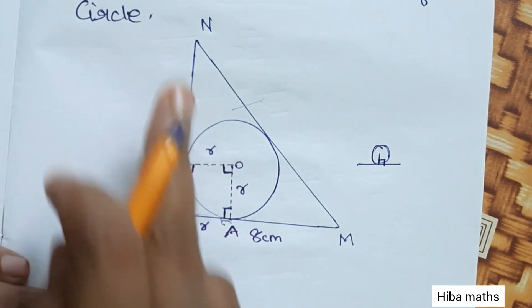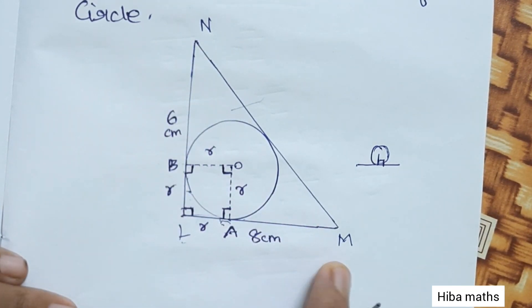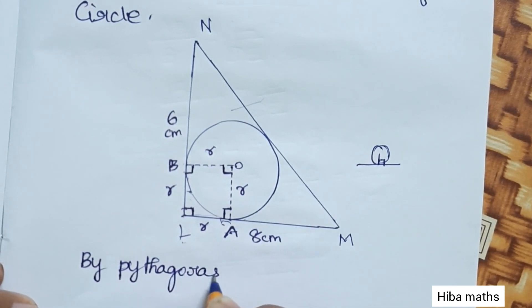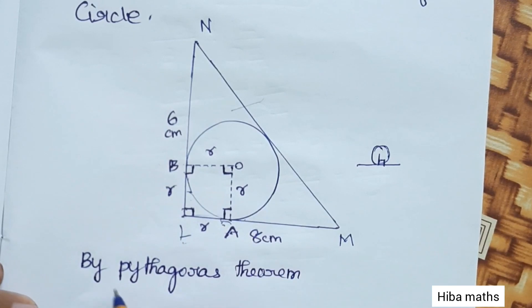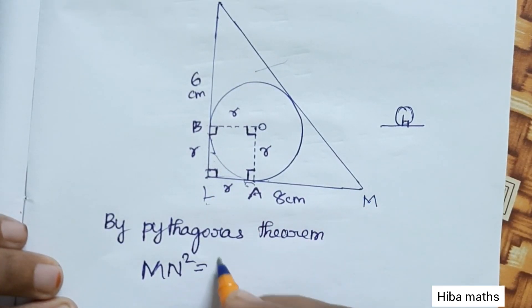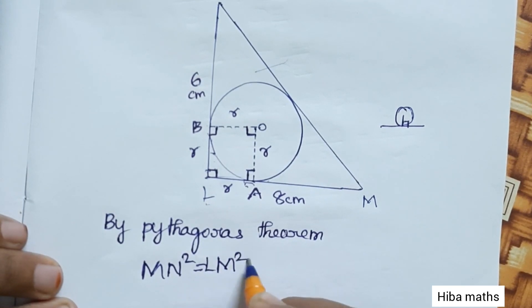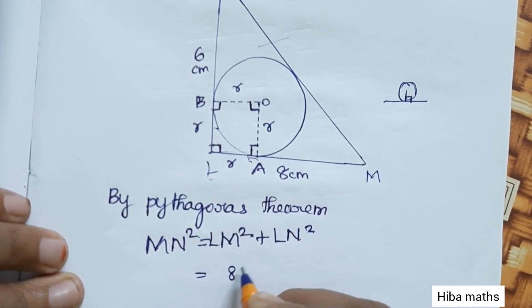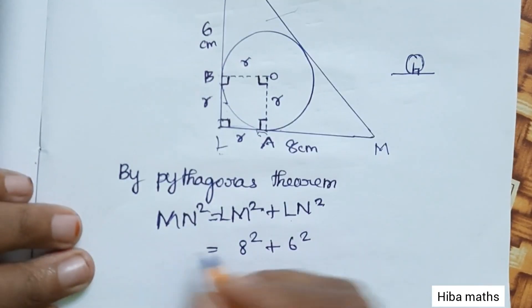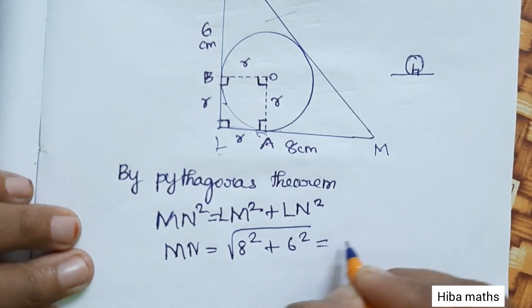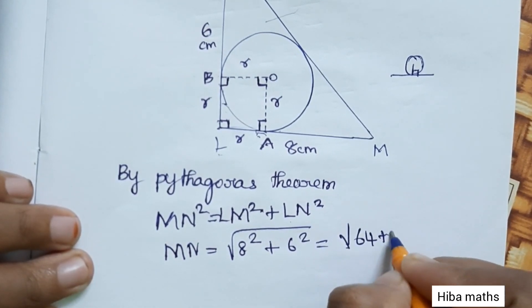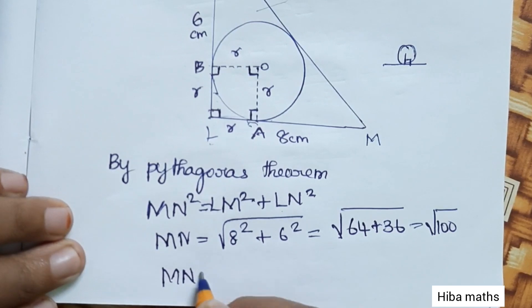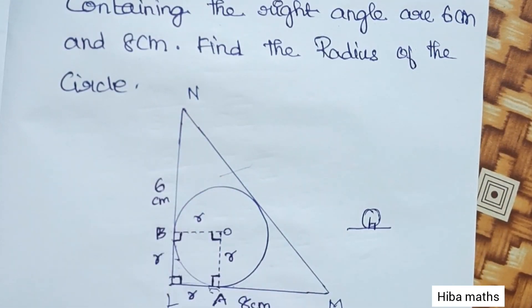MN is the hypotenuse. By Pythagoras theorem: MN² = LM² + LN² = 8² + 6² = 64 + 36 = 100. So MN = √100 = 10. Therefore MN equals 10.